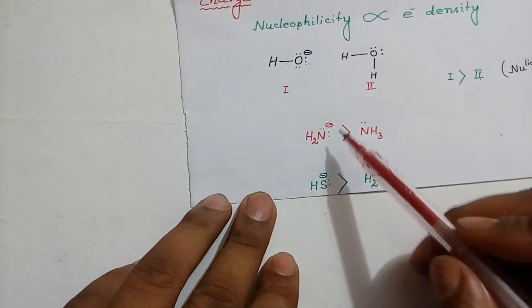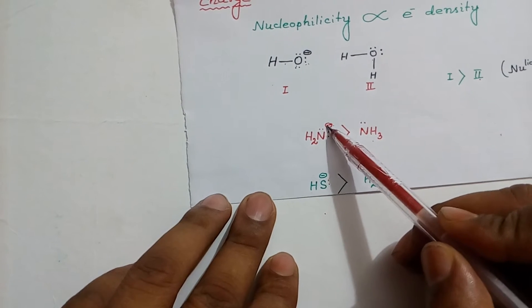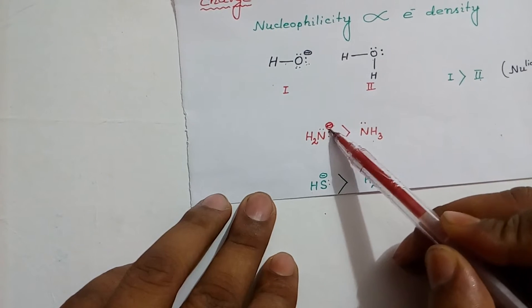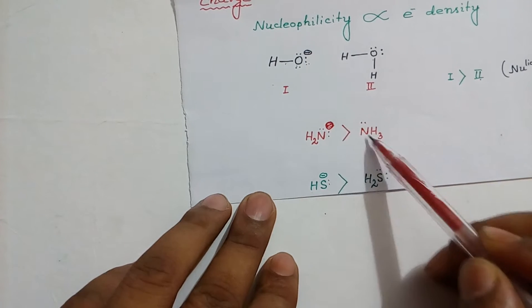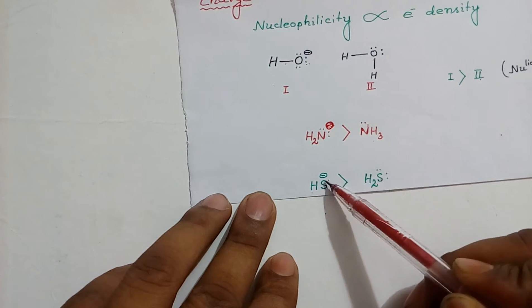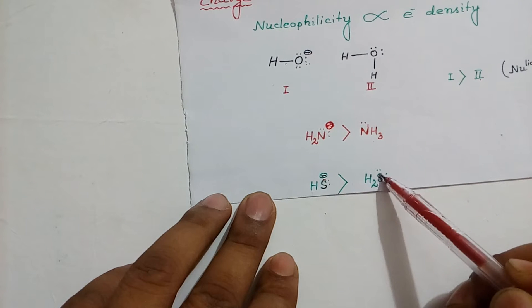Because N is having more electron density than this nitrogen. Sulfur is having more electron density here than here.